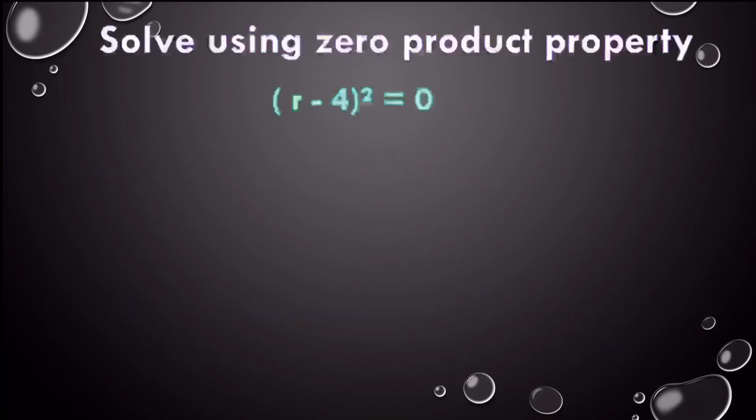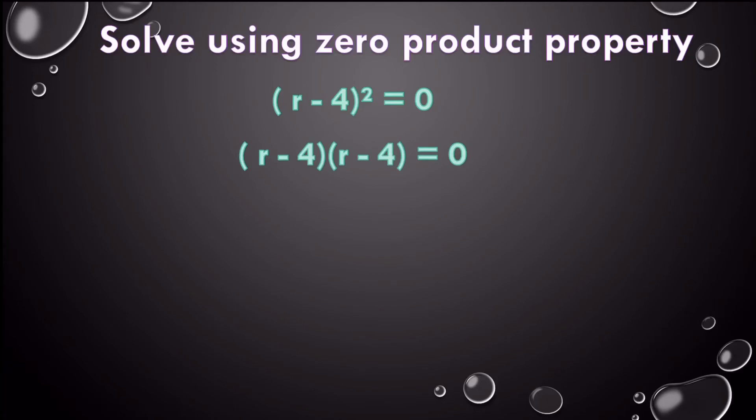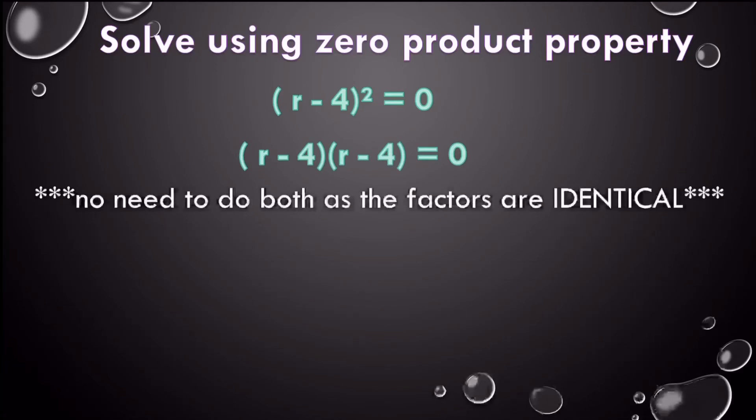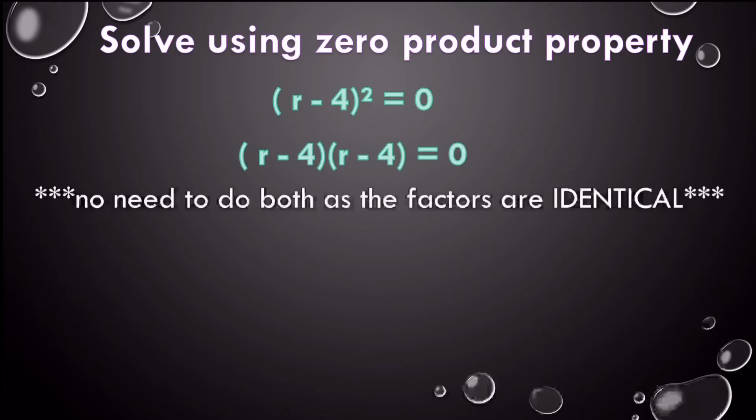So let's solve this using the zero product property. Well, remember what it means when we're squaring a binomial, that it's (r - 4) times (r - 4). These are identical factors. So you don't need to solve and set both equal to zero. You're going to get the same answer. So just take one, set it equal to zero. r minus 4 equals zero. I add 4 to both sides. So guess what? The solution is 4. That's okay. Sometimes that's going to happen.